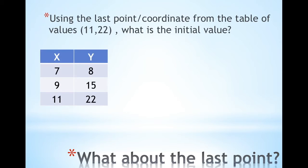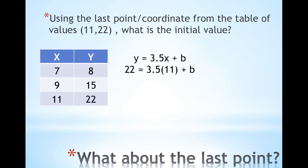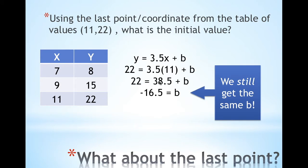And what about the last point? The last point in our table is (11, 22). Again, if we were to use this with our 3.5 slope, what would we get as the initial value? Here's our rule. Plugging in x = 11 and y = 22, we also get the same B.